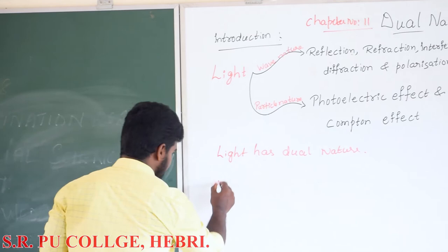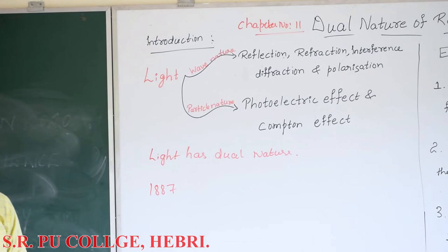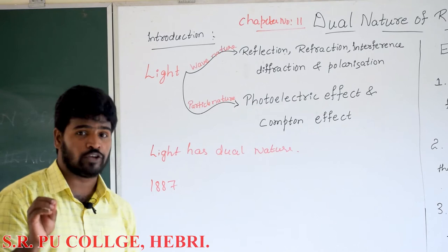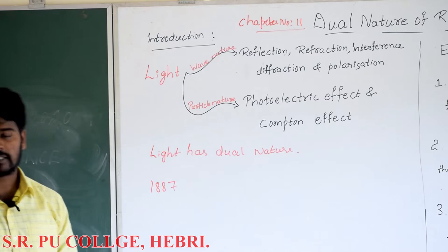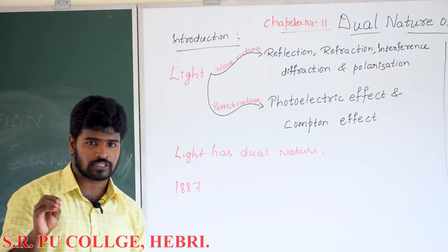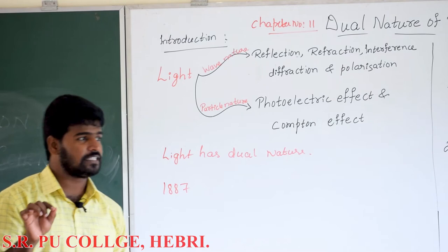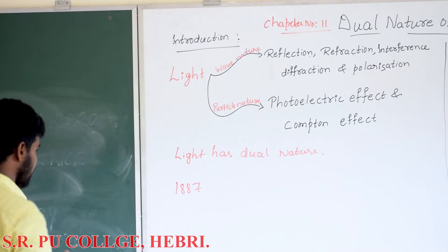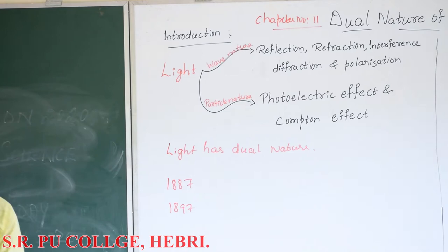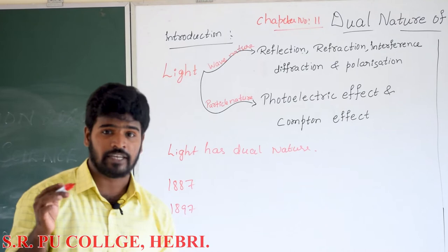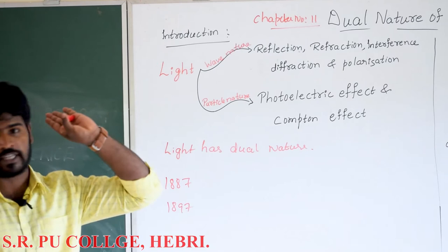In the year 1887, Hertz observed that when UV radiation falls on a metal, there is emission of negatively charged particles. When metals are heated to high temperatures, again there is emission of negatively charged particles. It was concluded that this particle is the same as cathode ray particles. Later, in the year 1897, J.J. Thomson concluded that this particle is named as an electron.